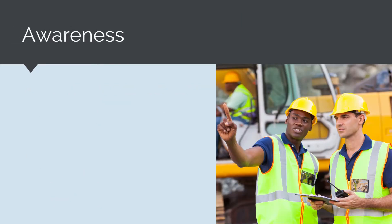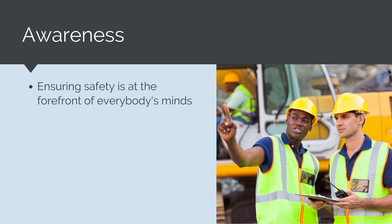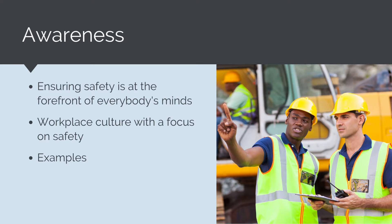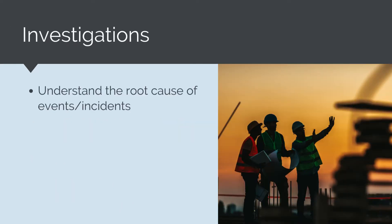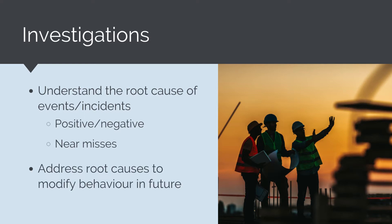Awareness is another important tool used to manage health and safety risks. It helps ensure that safety is at the forefront of everybody's mind and that a workplace culture focused on safety develops, empowering workers to stop work if they feel unsafe. Examples include pre-starts, toolbox talks, and company branding. Investigations are another useful tool to understand the root causes of events and incidents. When something goes wrong, an investigation helps identify the root cause to prevent the same thing happening again on this project and future similar projects. Investigations are not just about negative events — they can also identify positives to reproduce good behaviours in the future.